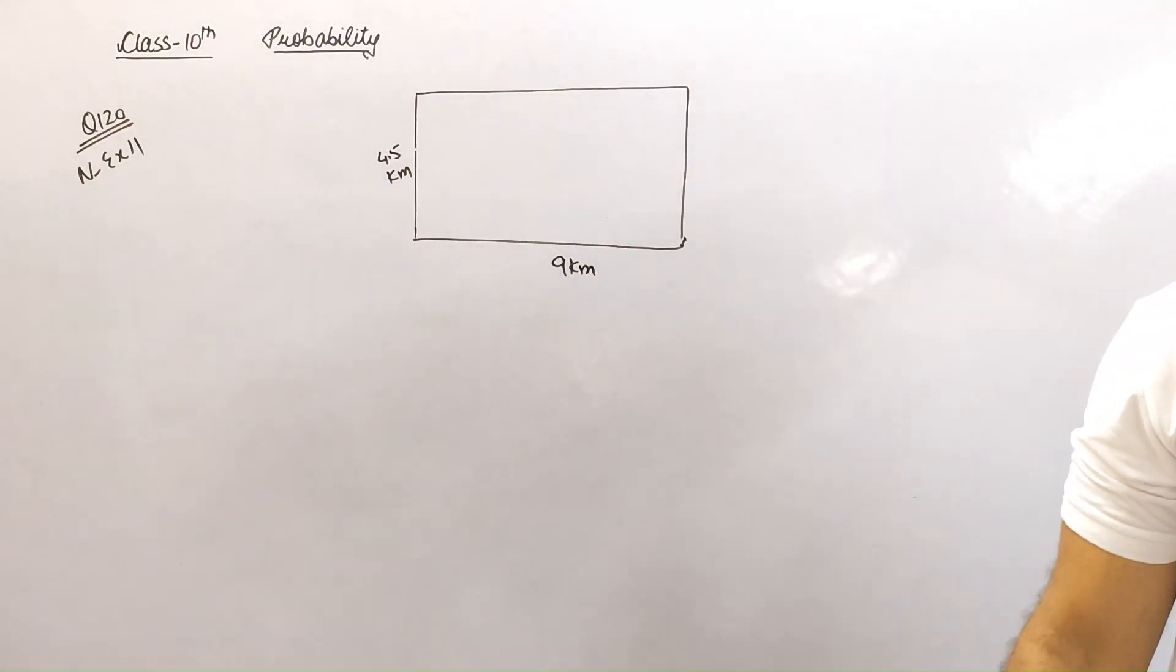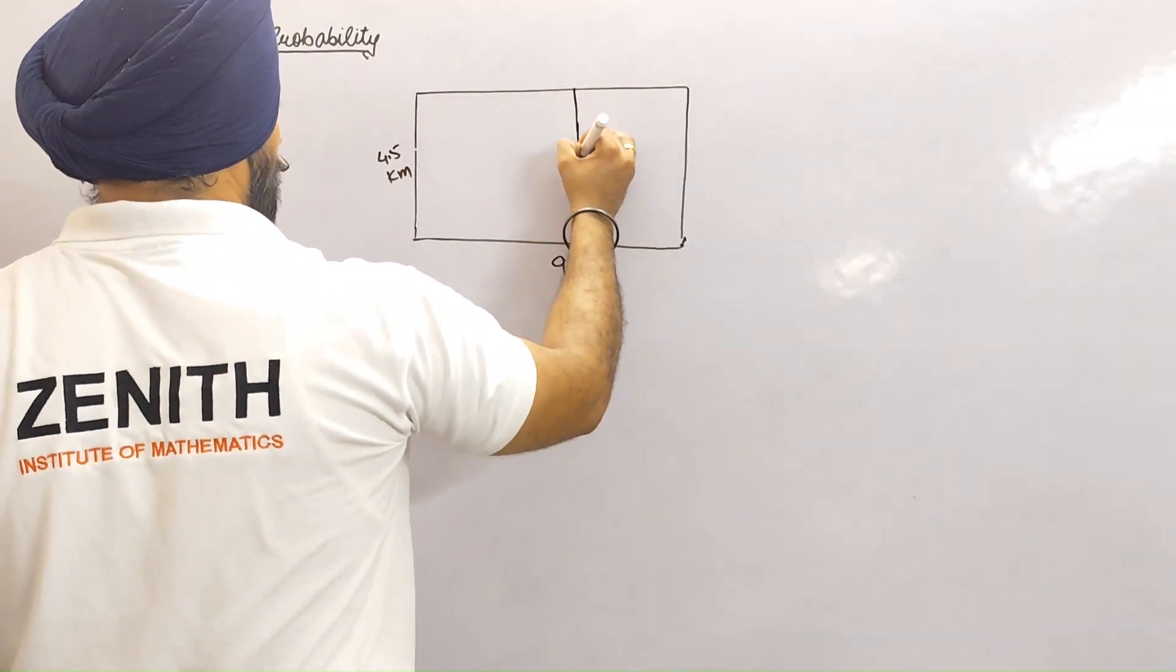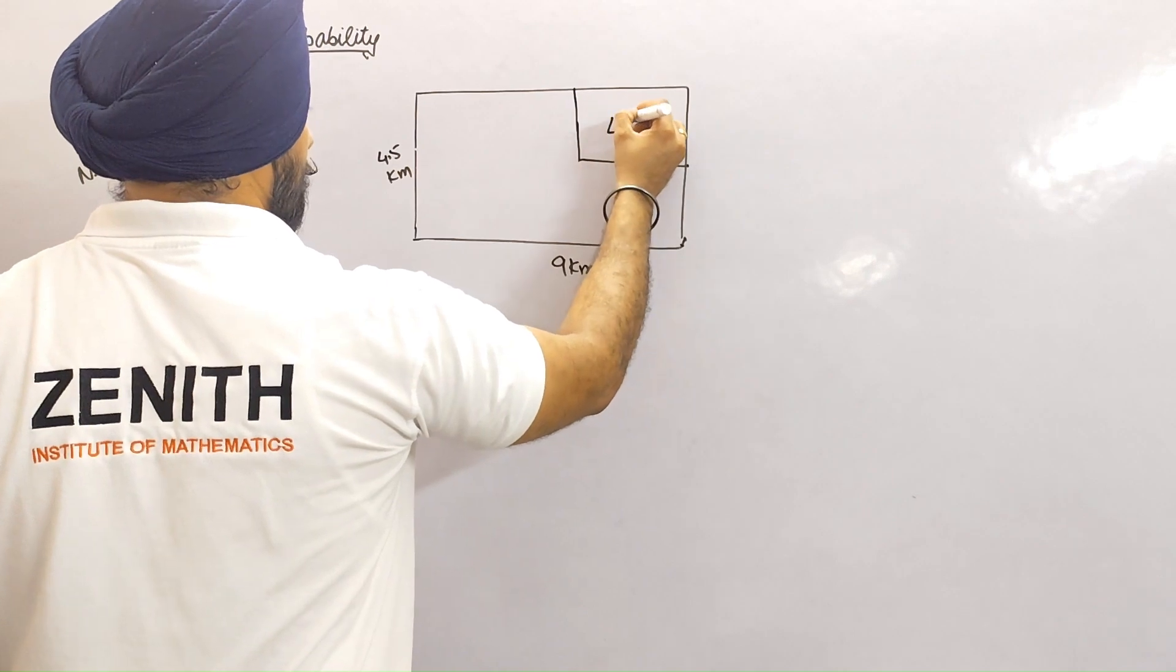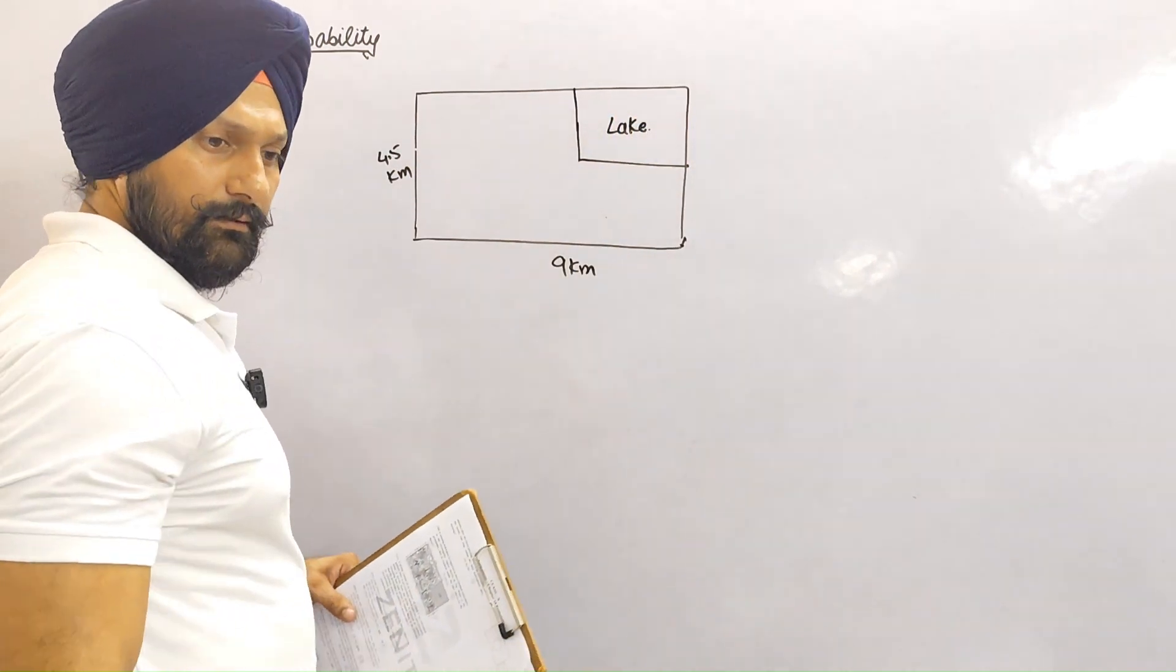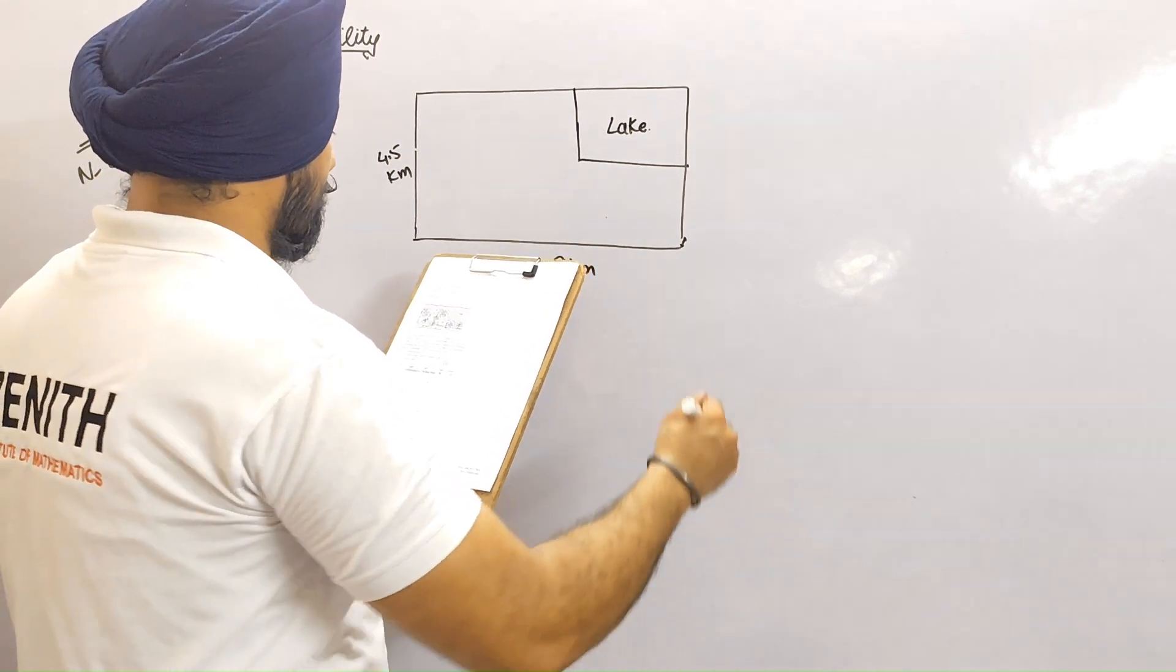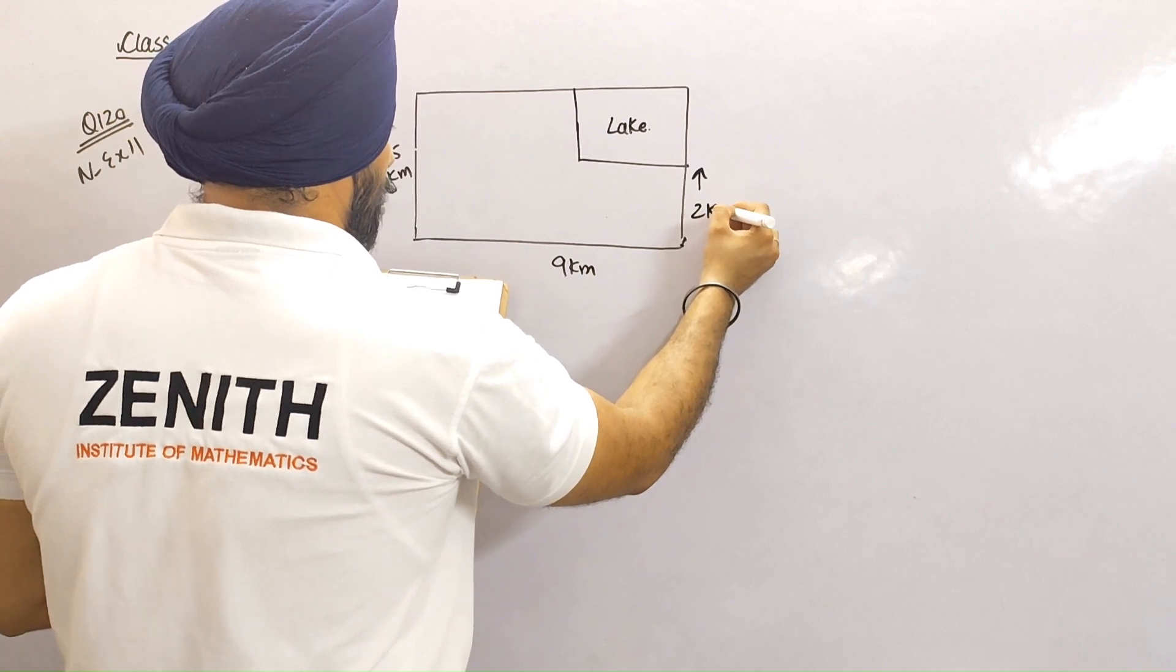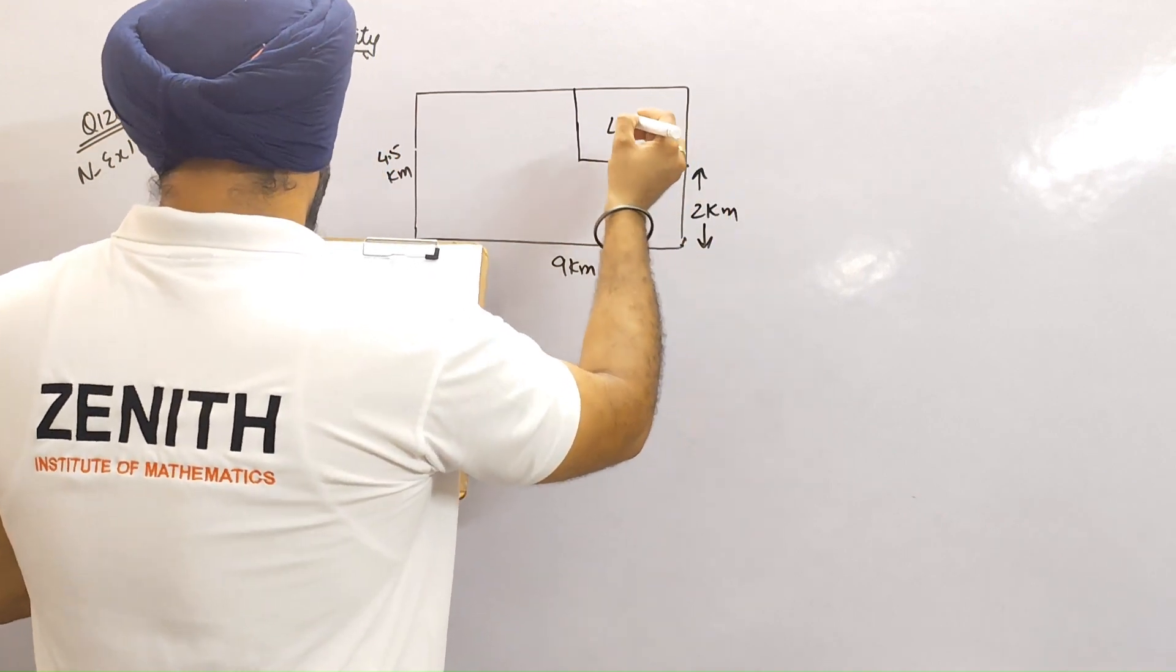it crashed inside the lake shown in the figure? Notice this dimension is not given, but this dimension is 2 km and this dimension is